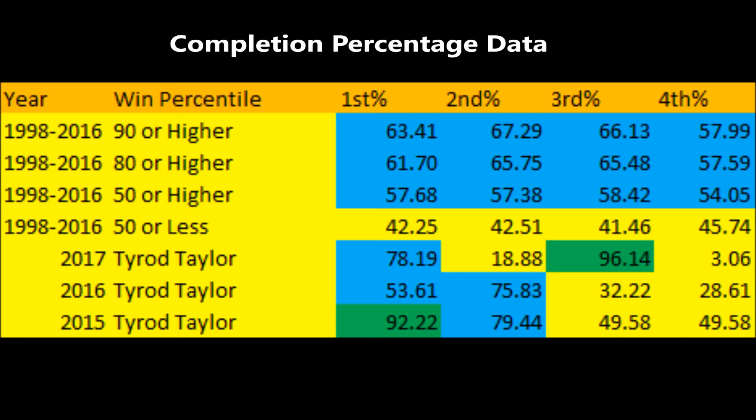His completion percentage in terms of various downs and distances has been all over the place. He definitely has had some positive areas — first down and second down especially have been more positive areas in terms of completion percentage. But the biggest takeaway from this data is that you want a quarterback who does well in all three downs. You don't want a quarterback who is really good on first down and third down but mediocre on second down, and vice versa. He's a quarterback who has flaws where he's just not able to have a solid completion percentage on every single down and distance.